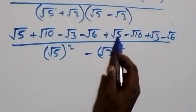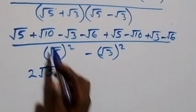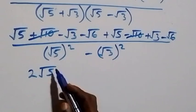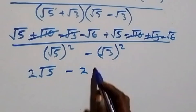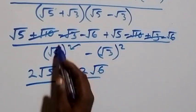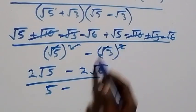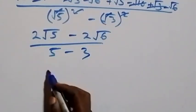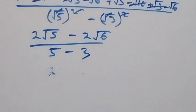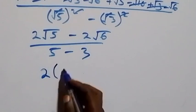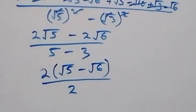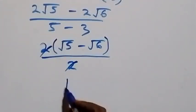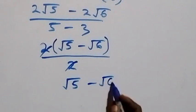Combining like terms: √5 + √5 = 2√5; +√10 − √10 cancel; −√3 + √3 cancel; −√6 − √6 = −2√6. The denominator gives 5 − 3 = 2. Factoring out 2: 2(√5 − √6) over 2, the 2's cancel, giving √5 − √6.